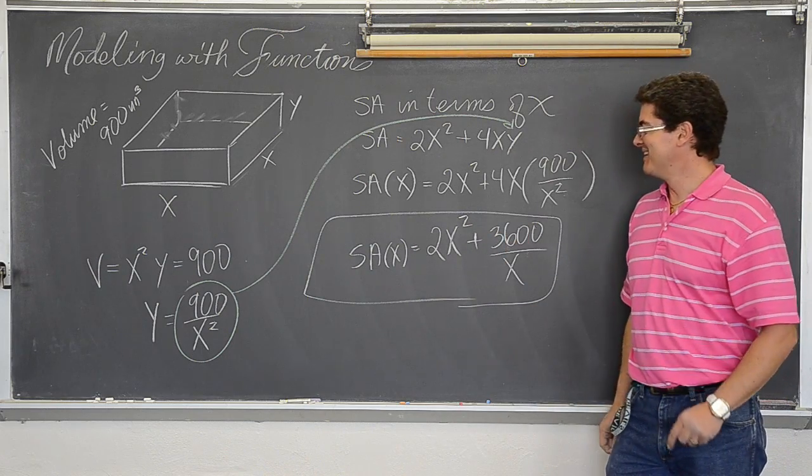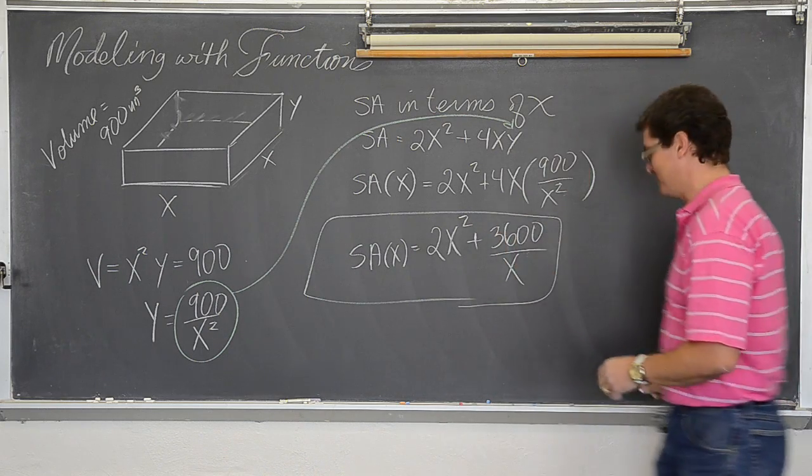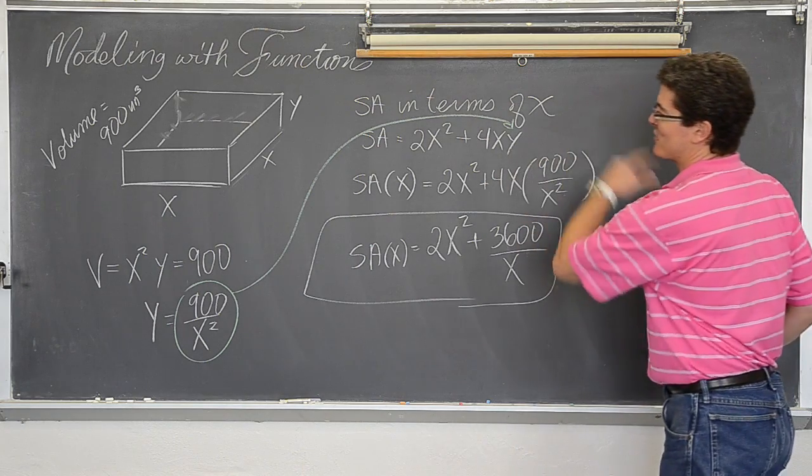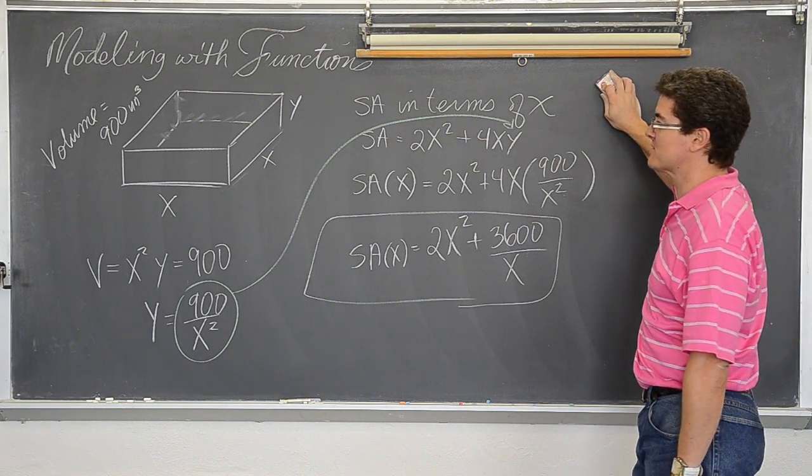BAM! Alright! That was a quiet BAM! That was kind of a hard question though, wasn't it? BAM! There we go. Celebrate some more. Surface area of a cube whose volume has got to be 900 in terms of x. Okay.